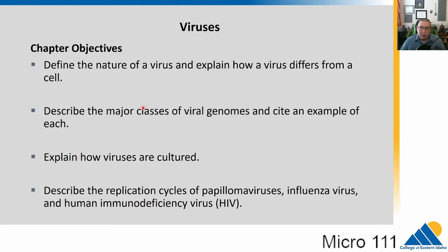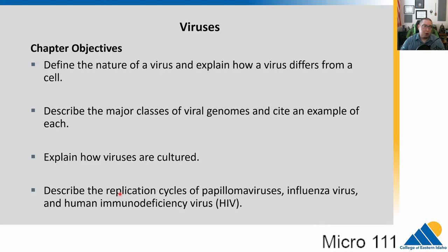We're going to talk about how viruses differ from cells and what they're made up of. We'll talk a little about how we classify viruses — I'm not going to ask you to memorize these classifications, but understanding what we use to classify them is important. We'll talk about how we culture viruses in the lab, replication cycles, and some symptoms of a couple of human viruses: papillomaviruses, influenza, and HIV. These are each different classes of viruses that interact with the body in different ways.